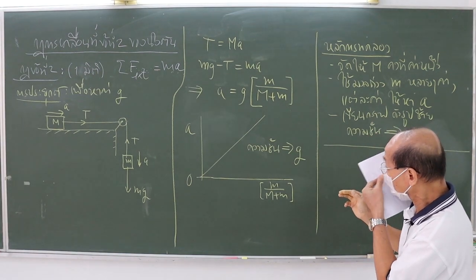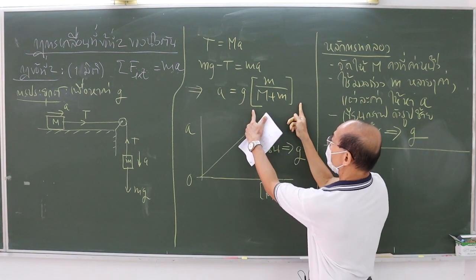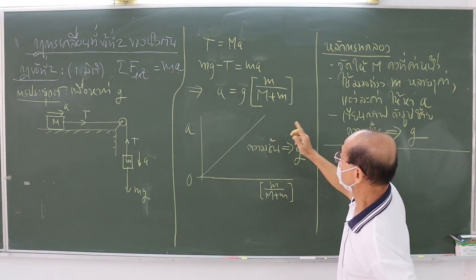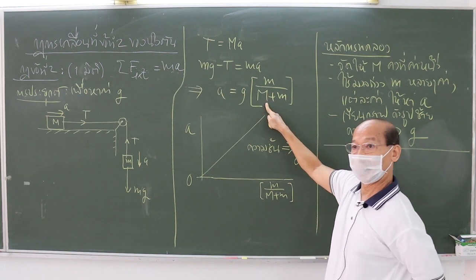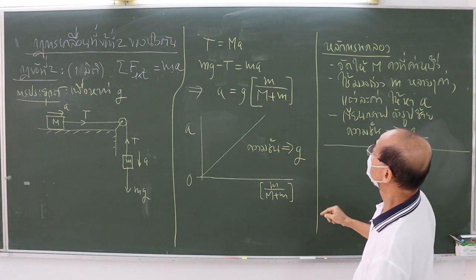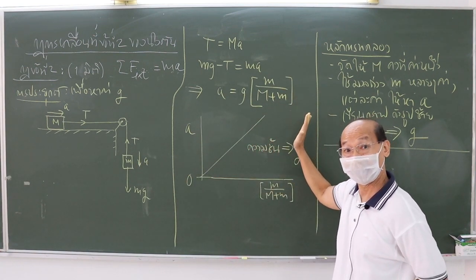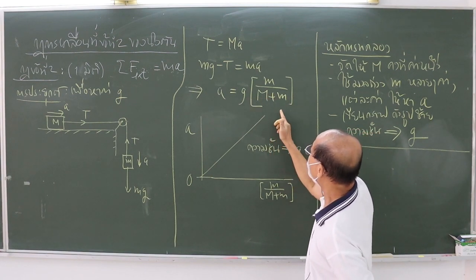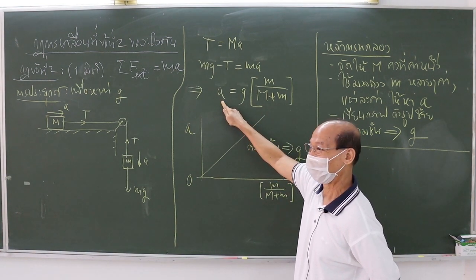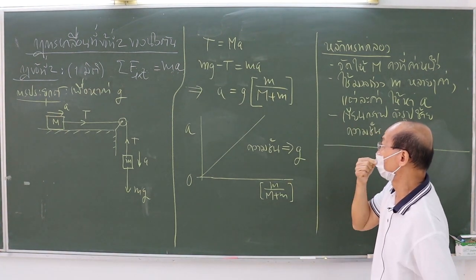Now you can see that it is the relation between the quantity A and the quantity in the brackets. Suppose we use a fixed value of capital M and a set of different values of lower m. For each value of lower m used, we measure the corresponding acceleration. After having done all the measurements, you will obtain a data set of the mass ratios and the acceleration A, which you can use to plot the graph between A and the mass ratios.